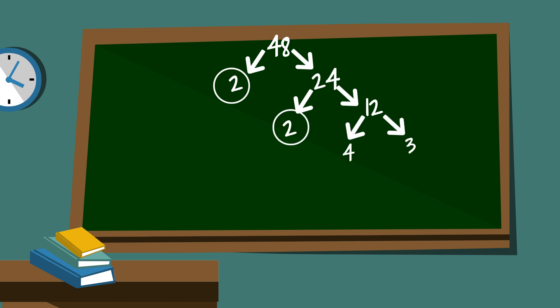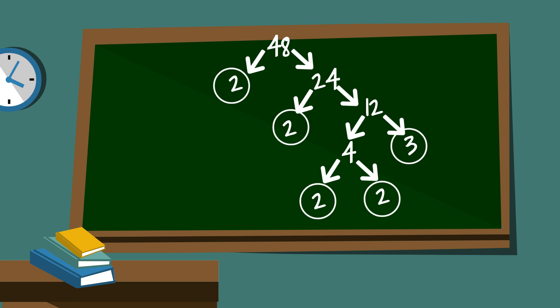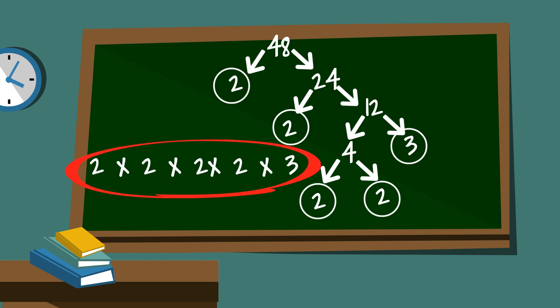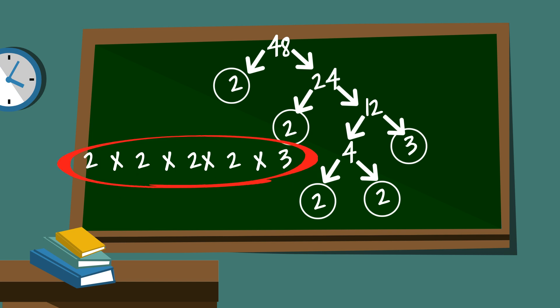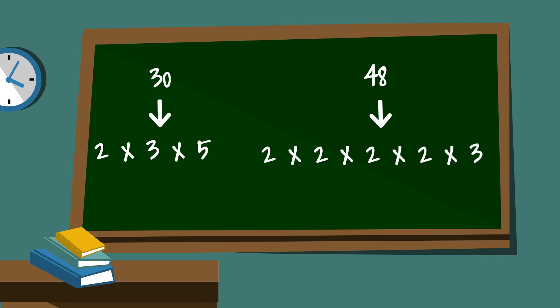4 times 3 equals 12. Circle the 3 because it is prime, and then 2 times 2 is equal to 4. So the prime factorization of 48 is 2 times 2 times 2 times 2 times 3. You can also write it in exponent format. So there we go — the prime factorization of 30 and 48.